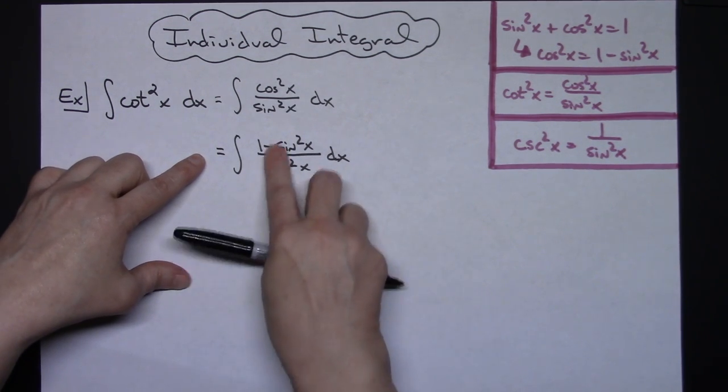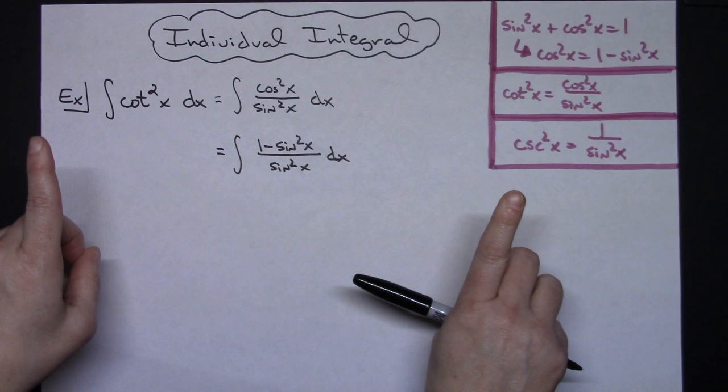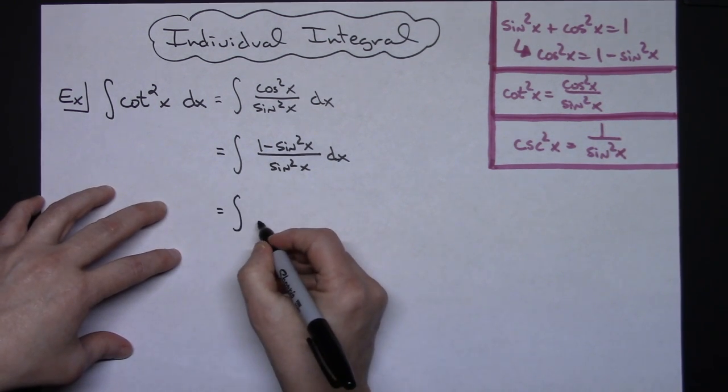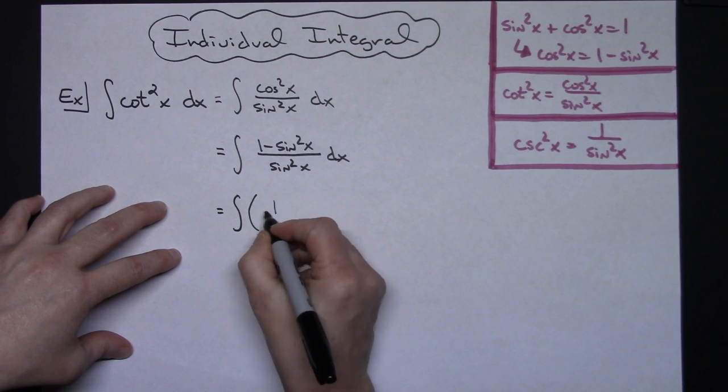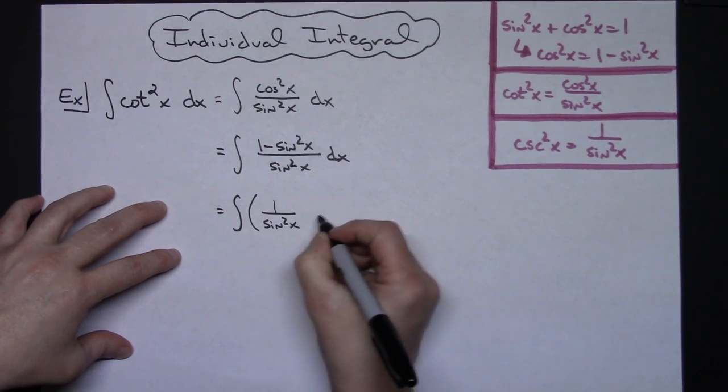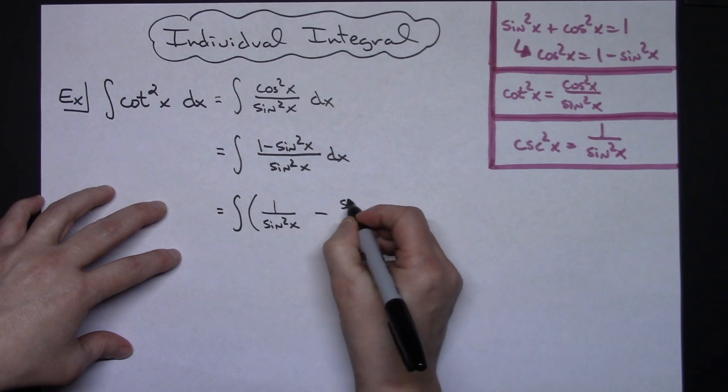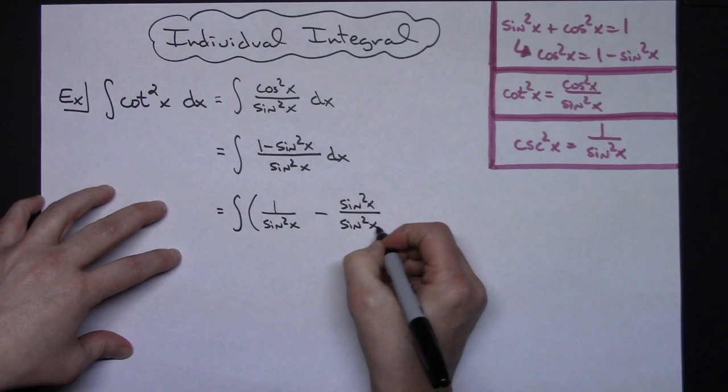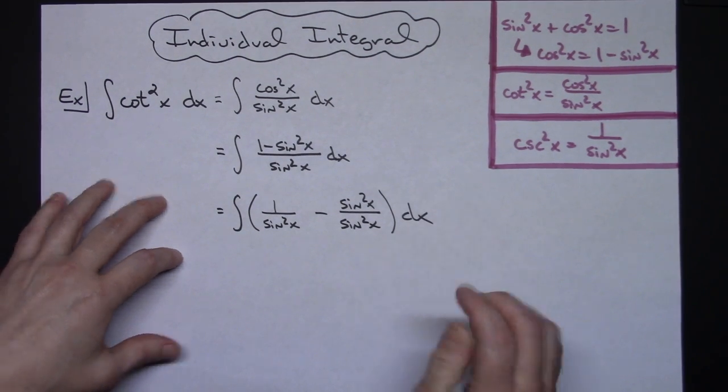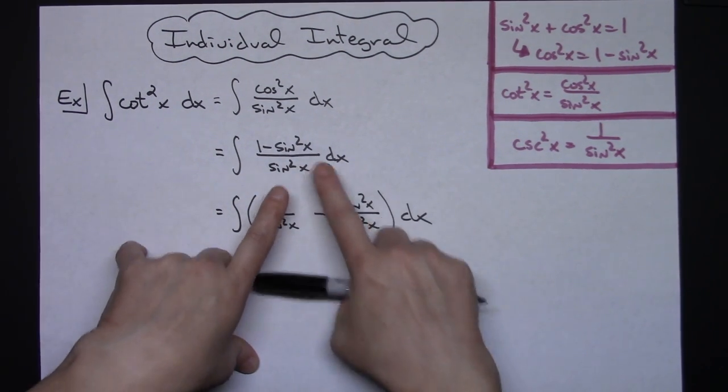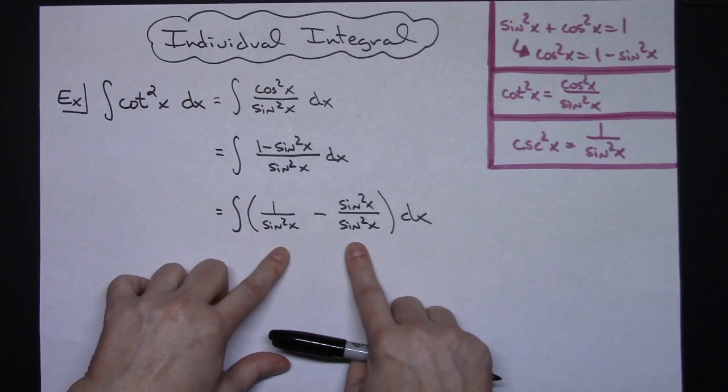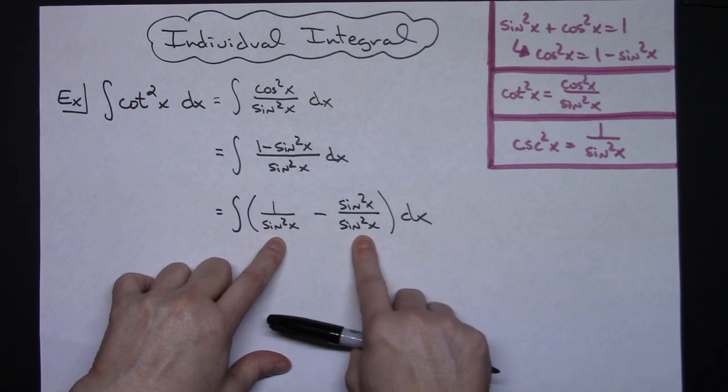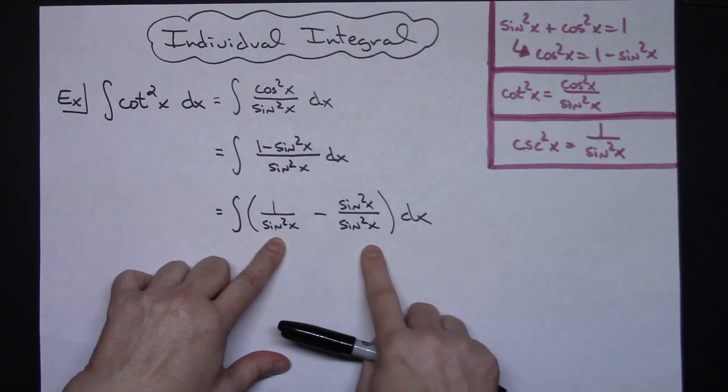Now we're going to take this rational function and break it up into two separate individual ones. So this will be the integral of a 1 over sine squared x minus a sine squared x over a sine squared x and then our dx. Alright, whenever you do that and you break up a rational fraction into two individual ones, you should then check your work, take these two, subtract them and see if you can get back that original function.